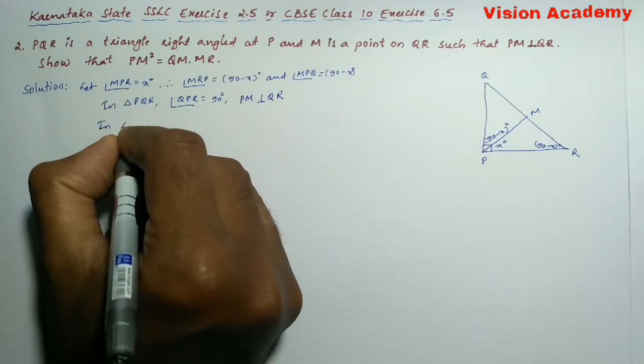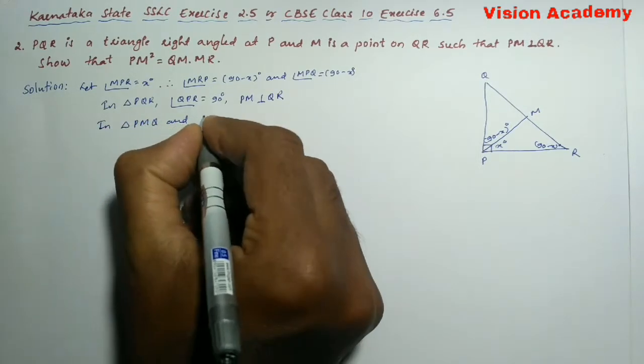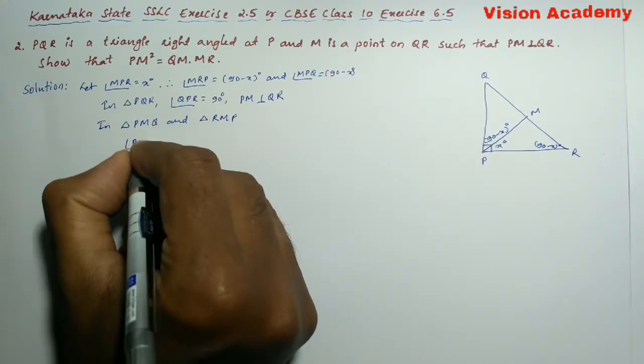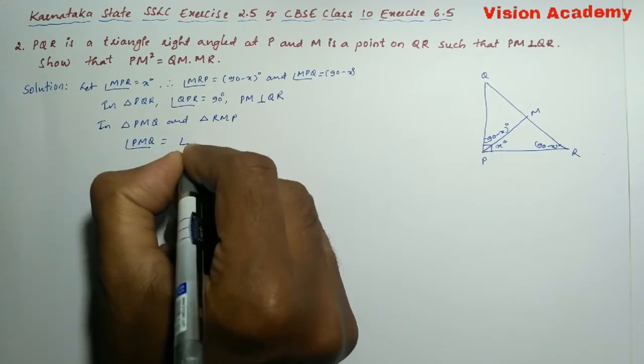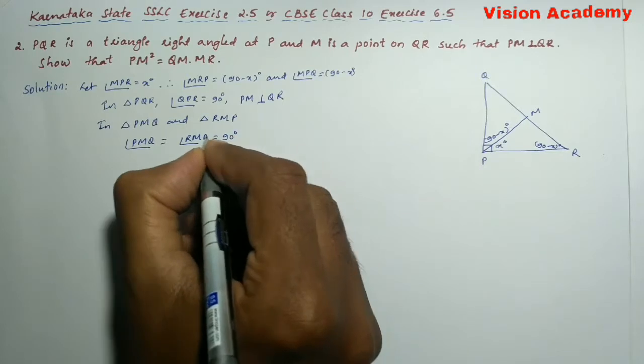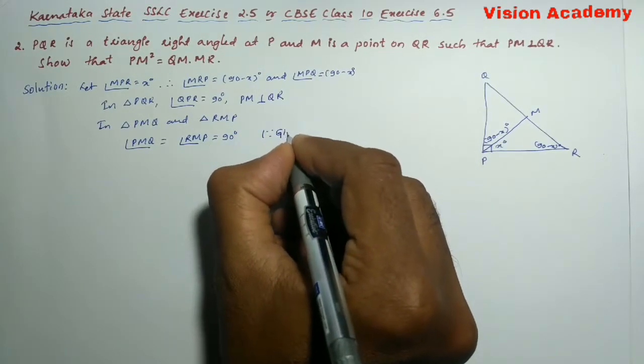In triangle PMQ and triangle RMP, angle PMQ is equal to angle RMP which is equal to 90 degrees because it is already given.